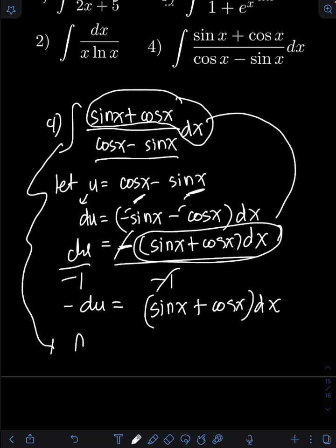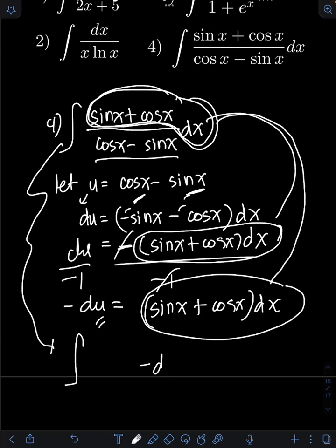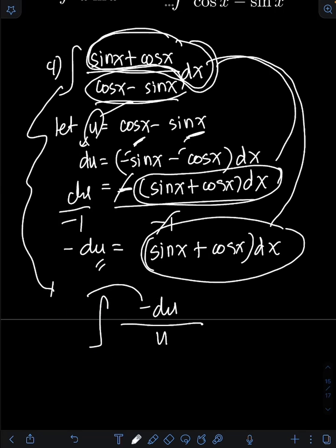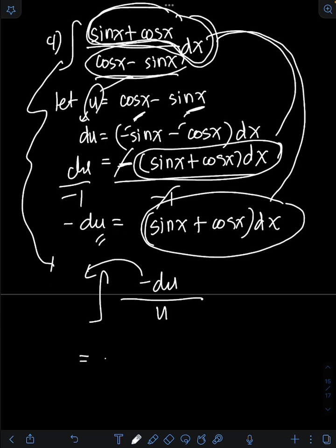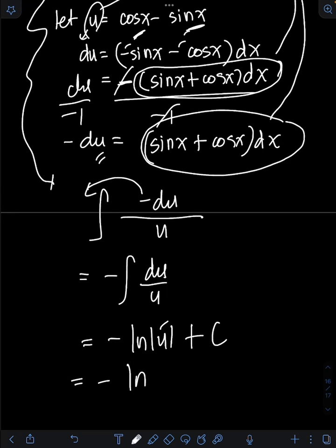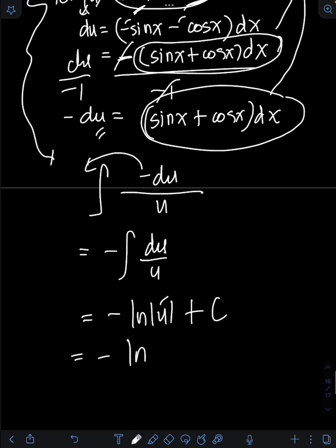We can now substitute. We have the integral of: sin x plus cosine x dx is now equal to negative du, over cosine x minus sin x in the denominator, which equals u. So we have the integral of negative du over u. The negative is just a constant of negative 1, so we have negative integral of du over u, which equals negative ln of the absolute value of u plus C. Transforming back, the final answer is negative ln of the absolute value of cosine x minus sin x, plus C.